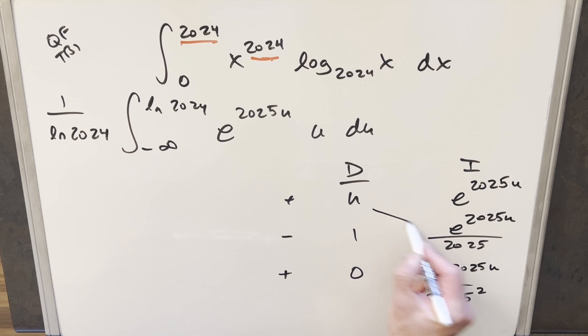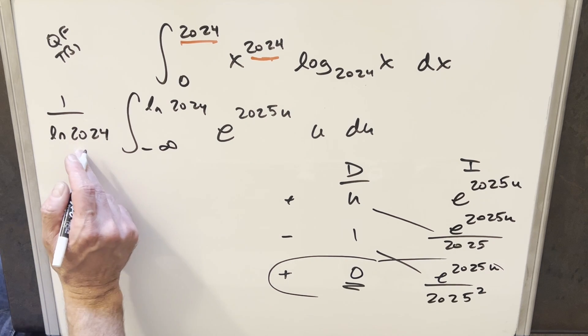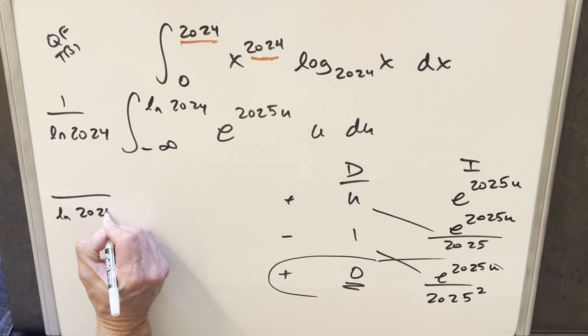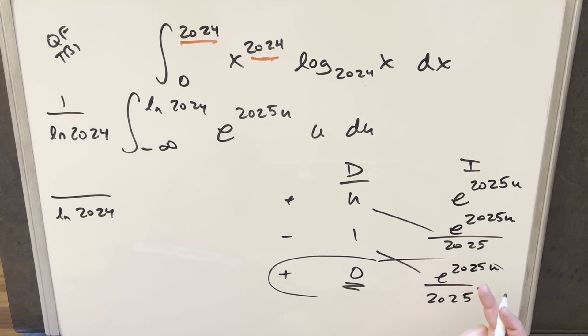But now we have part of our solution here on the diagonals. The last row has got a 0 in it. So we're not going to be integrating 0. So coming over here, we still have this 1 over ln 2024 in front. So we'll keep that. And I think what I'll do, I'm just going to factor out the e to the 2025 u. So we'll factor that up front here like this.